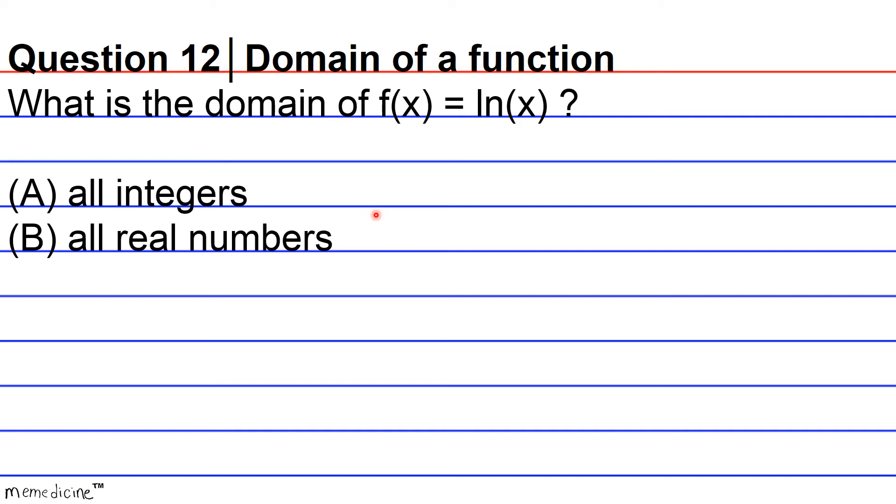Also included in the irrational number set is the natural number E, which is our base here. Our base is Euler's number, the natural number E. So let me just, well, should I write this out for you? No, we'll get into that. I know this is a long aside.